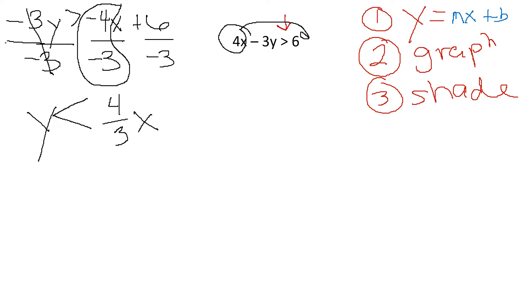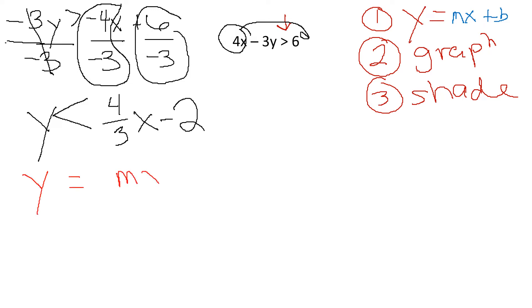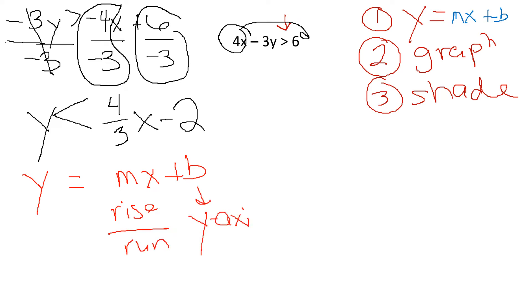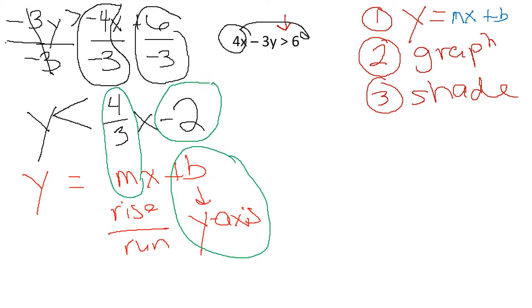Negative divided by a negative is a positive. Leave your fraction as an improper fraction. Then 6 divided by negative 3 is minus 2. Now, going back to Y equals MX plus B — M is our rise over run, B is where it crosses the Y axis. You always want to plot your B first. In this case, B is negative 2, and my M, or my rise over run, is 4 over 3.